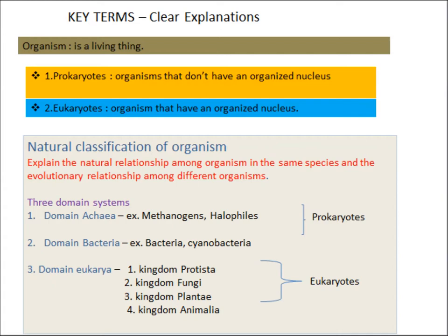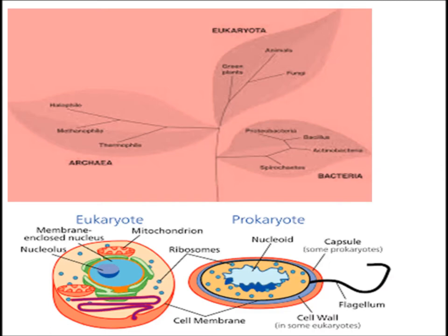Now let's see about the three domain system. This is the most appropriate system to classify organisms in the natural classification. According to this classification there are three domains: domain Archaea, domain Bacteria, and domain Eukaryote. The organisms belonging to domain Archaea and domain Bacteria are prokaryotes.